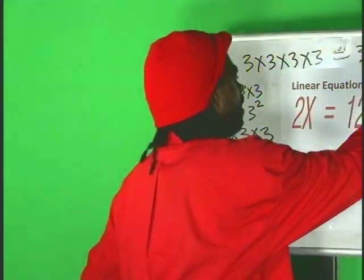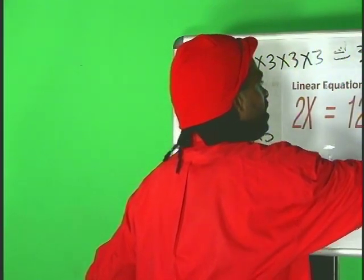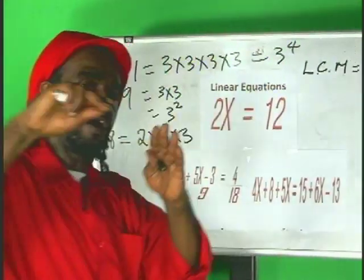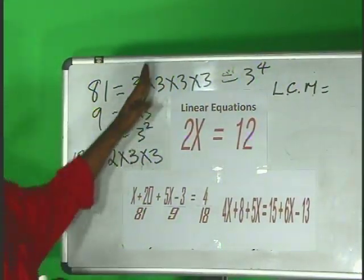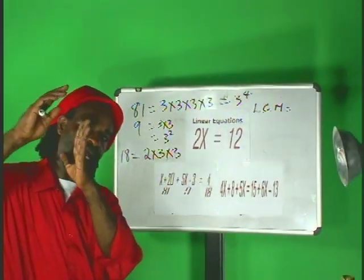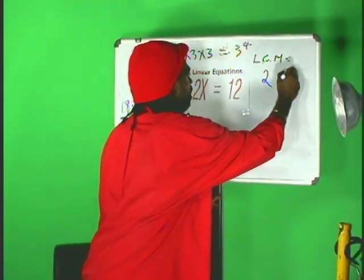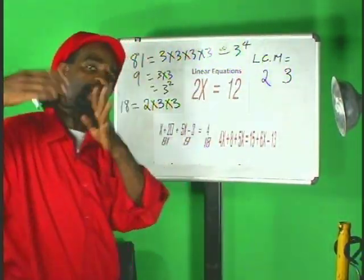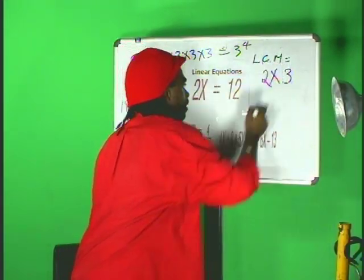Now, in order to find the LCM, which means the least common multiple, you are going to look for the different prime numbers throughout all three numbers, which happens to be 2 and 3. There are no more prime numbers.